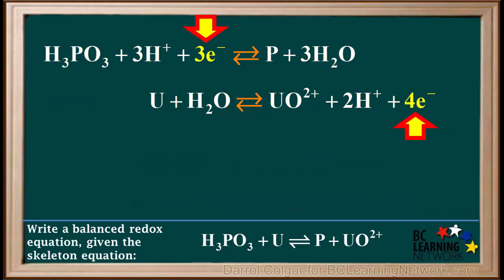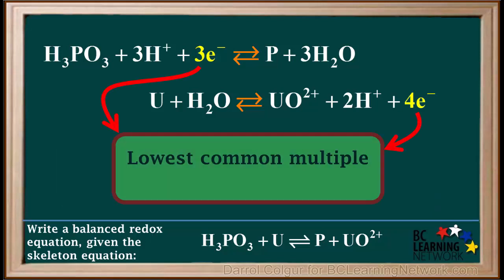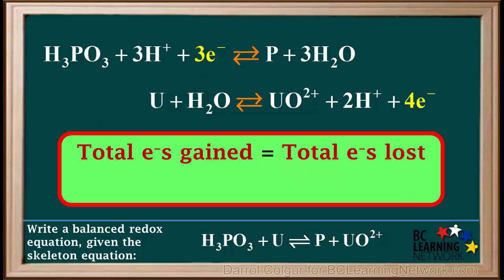We see that as they are written, the top reaction gains 3 electrons, while the bottom one loses 4 electrons. However, in order for a redox equation to be balanced, the total electrons gained must be equal to the total electrons lost. What we do is determine the lowest common multiple of 3 and 4, which is equal to 12.